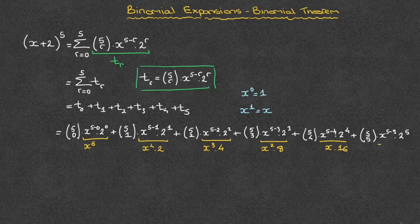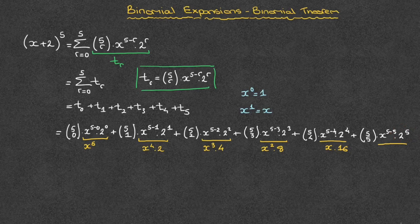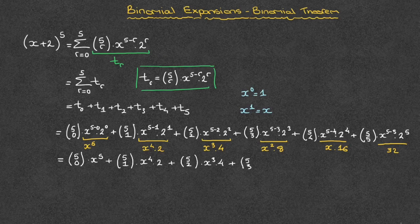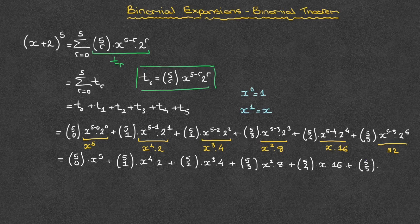Finally, for the last term, we have x to the power of 5 minus 5 times 2 to the power of 5. Now, x to the power of 5 minus 5 will be x to the power of 0, and since that equals 1, we can ignore that completely. And 2 to the power of 5 is 32, so we'll have 32 there. So at this stage, we can state that this expansion is equal to (5,0) times x to the power of 5, plus (5,1) times x to the power of 4 times 2, plus (5,2) times x to the power of 3 times 4, plus (5,3) times x squared times 8, plus (5,4) times x times 16, and finally plus (5,5) times 32.